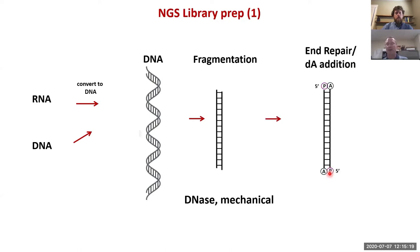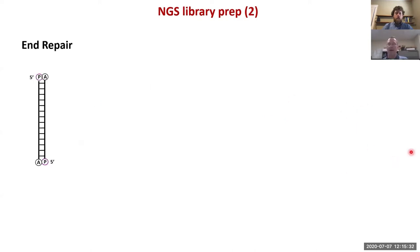We have a very precise ultrasonicator here in the core facility which can give you very precise sonication fragments. After fragmentation there's a so-called end repair step where you add on the 5-prime end the phosphate group and on the 3-prime end the adenosine monophosphate.